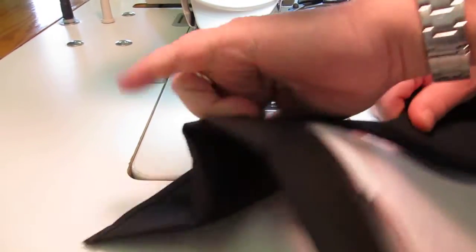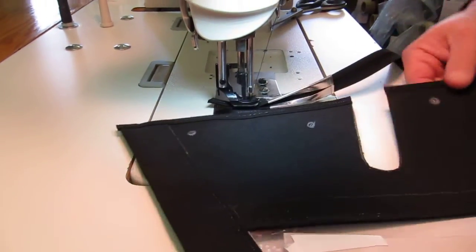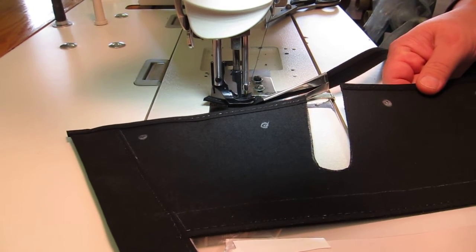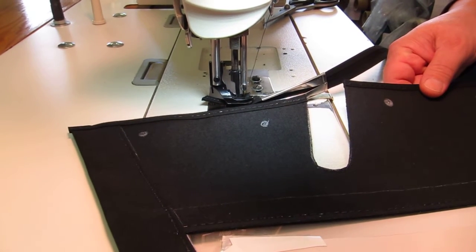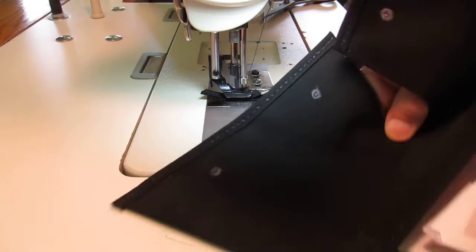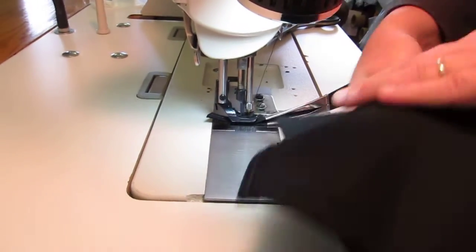Here we are, we're doing the front panel of the Dodger and I'm just going to show how you go around the inside corners of like a handle cutout or a line cutout or whatnot that you encounter.